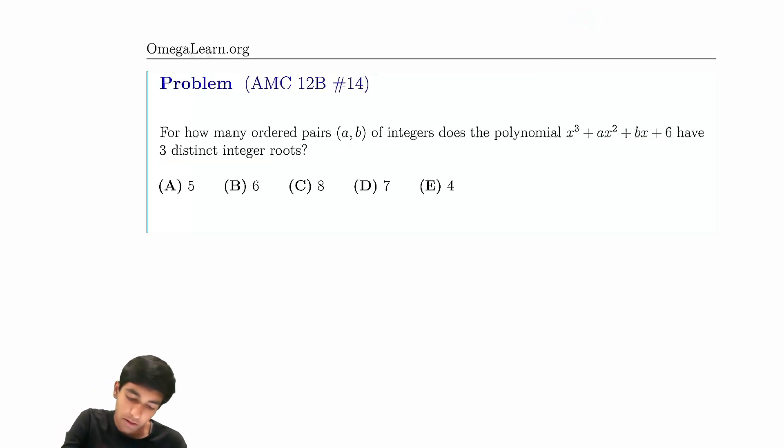We just used Vieta's formulas, right? We know the product of the roots is plus, minus, plus. So r, s, t, the product of the roots, is negative 6.